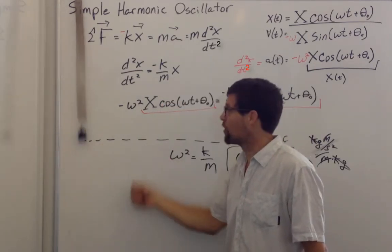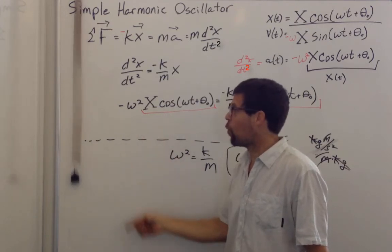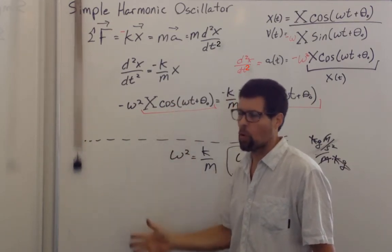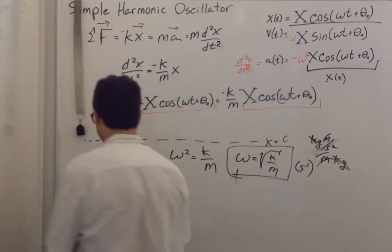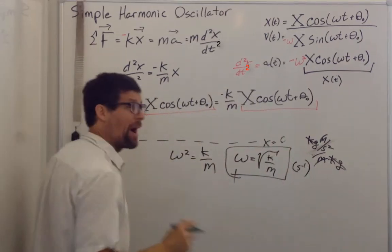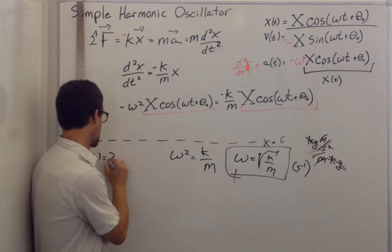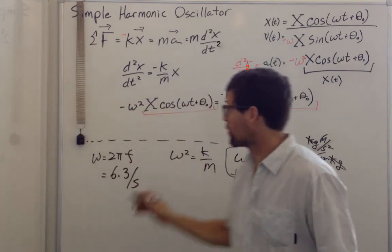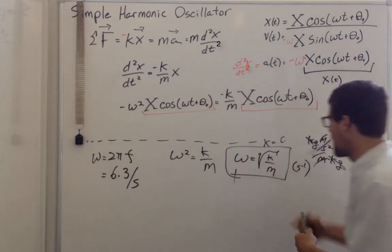So we can just, for instance, check. This thing goes up and down at a frequency of about one hertz. One, two, three, four. So we know omega is about 2 pi times the frequency or about 6.3 radians per second.